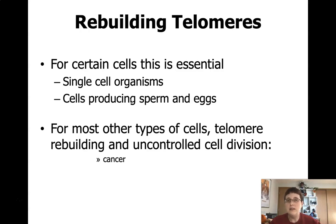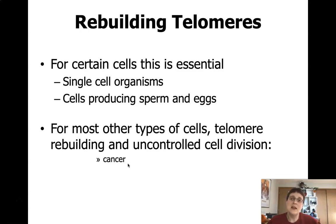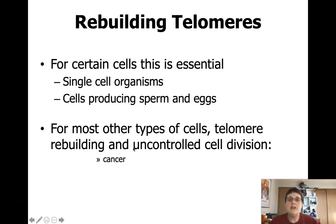So how are cells rebuilding their telomeres? It's an enzyme called telomerase. We have that enzyme when the cells are made, but the gene for that enzyme gets turned off so that we can't rebuild telomeres just whenever. Single-celled organisms and the cells that produce sperm and eggs have the ability to turn the enzyme back on when they need it, and then turn it back off. The problem is when some cells get the ability to turn it on, or it gets turned on and left on — they can lead to those cancer-type cells.